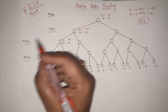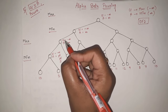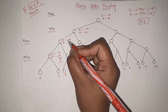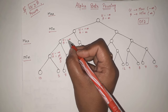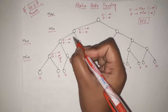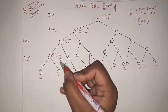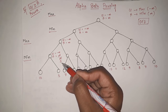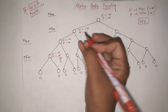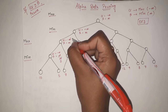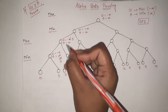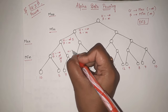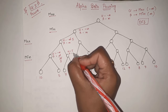We will go back up. This level is max, so we will update alpha. We will update alpha with the maximum value. Out of minus infinity, minus infinity, and 5, the maximum value is 5. So alpha is updated to 5. We will come to the child node, so alpha equal to 5 and beta equal to infinity are copied here.